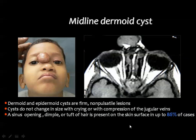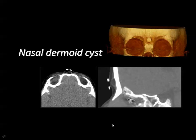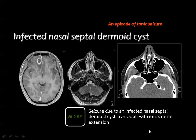Differentiating nasal glioma from dermoid cysts requires identifying fat within the dermoid. Fat on MRI behaves opposite to water: when water is dark on T1, fat is bright; when water is bright on T2, fat is dark. By CT, you may identify fat inside a midline dermoid cyst. An infected nasal septum dermoid cyst may be complicated by an intracranial brain abscess in the frontal lobe, as shown on contrast-enhanced MRI.